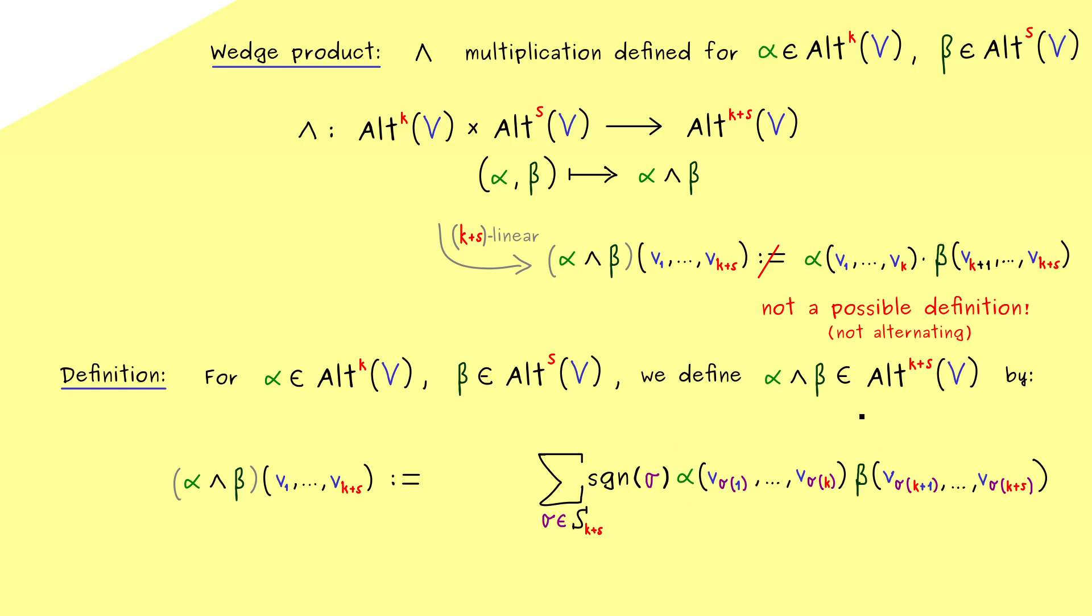Okay, and now we have it. Now you should see that this big sum here gives us an alternating (k+s)-form. This is guaranteed because we go through all possible permutations anyway. So it's completely similar to the Leibniz formula for determinants.